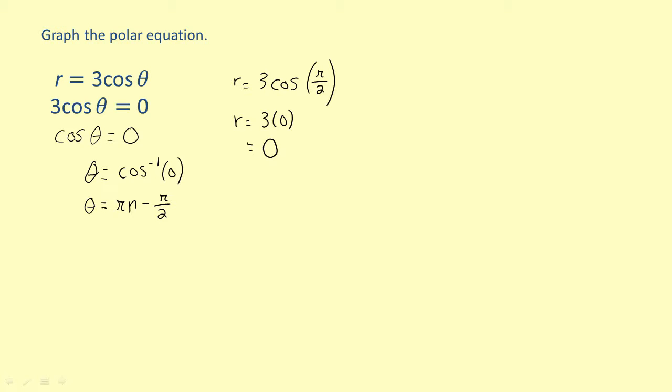So the zeros of the equation are the points 0, plus or minus pi times n minus pi over two. Since all of these points coincide for any value of n, we only need to plot one of them on the graph.